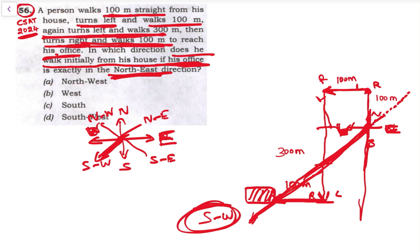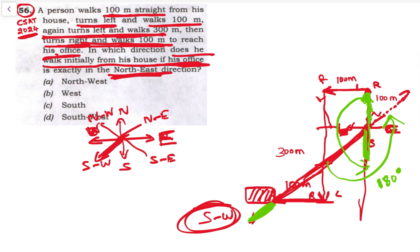To bring the office to the northeast direction, we need a 180-degree turn. When starting in the north direction, the office is in the northeast — so from north, a 180-degree turn gives us south. That means if we start moving south, the office would be in the northeast direction. So he has to walk southwards initially.